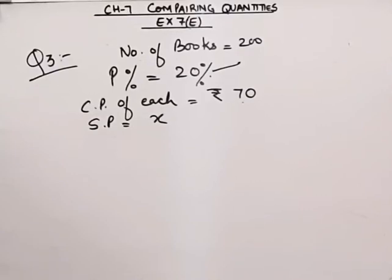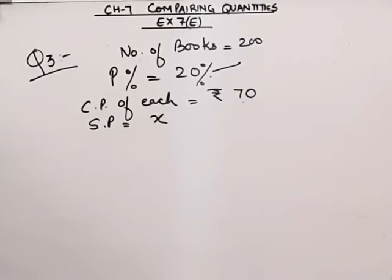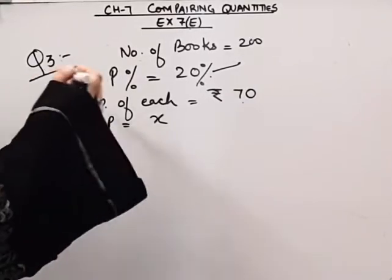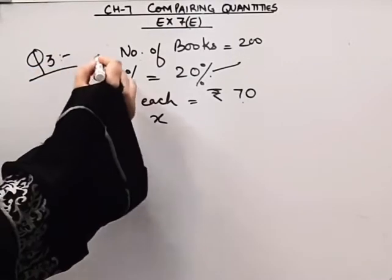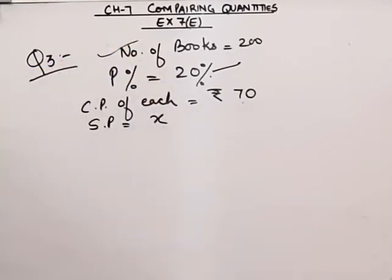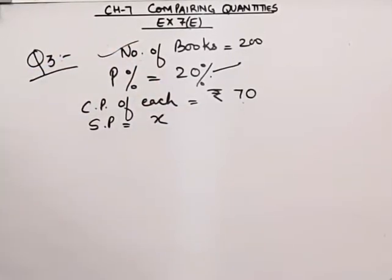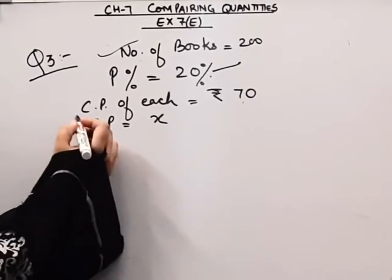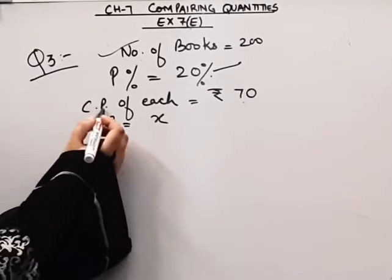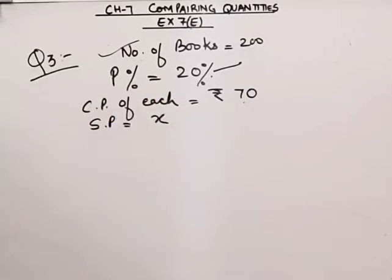Hello everybody, welcome to Pay No Solution. Today we will be doing question number three from XSR 7E. There is a bookseller who sold some books. They were 200 books, and the profit on them is 20 percent. Now in the question, we are given the cost price of each book is 70 rupees.